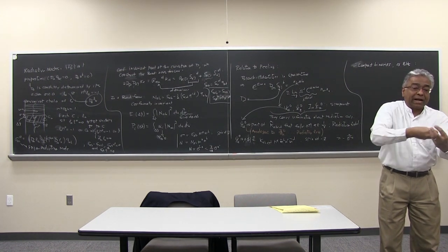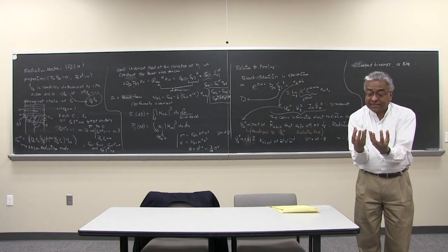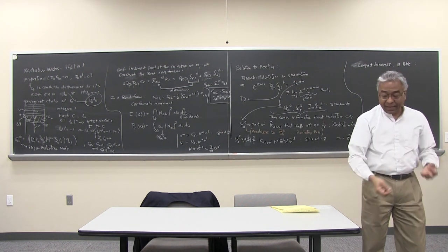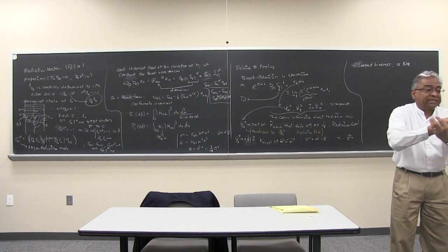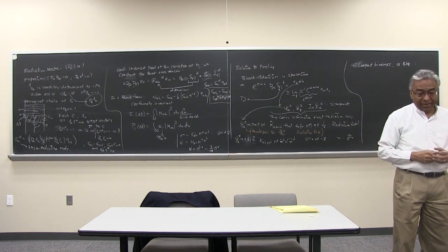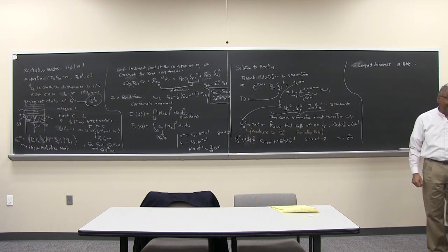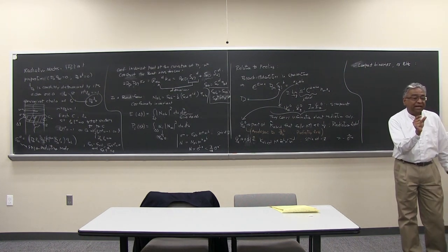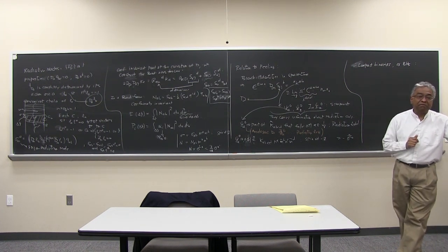The Maxwell field is a spin-one vector field, so it is a dipole moment that changes and gives rise to Maxwell radiation. Gravitons correspond to spin-two particles, so gravitational waves have a quadrupole structure — you need a quadrupole moment changing in time. A star oscillating can emit gravitational waves; similarly, two black holes or two neutron stars going around each other have a changing quadrupole moment for the total system, and therefore gravitational waves are emitted.